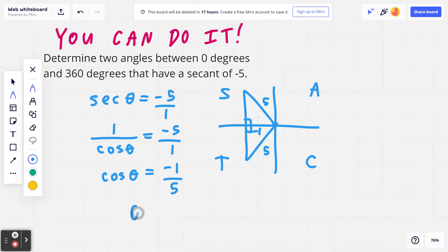Make sure your calculator is in degree mode. Take the inverse cosine of negative 1 divided by 5. When you do that,